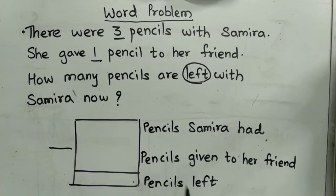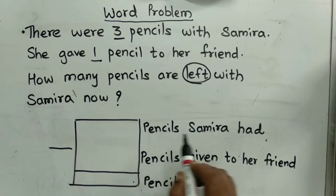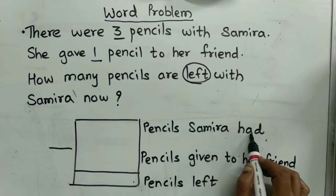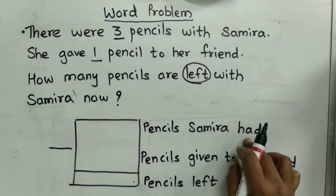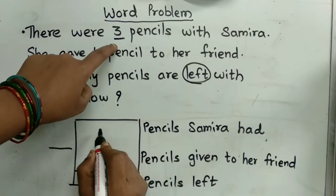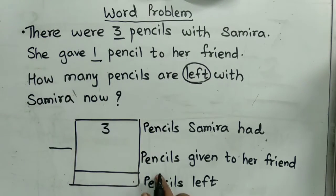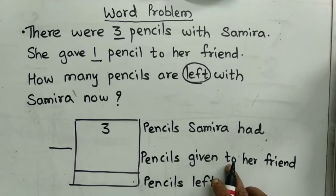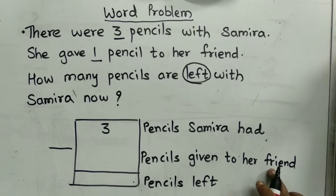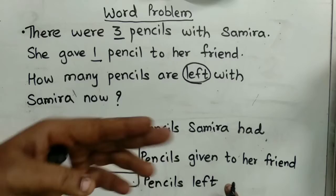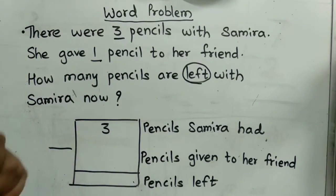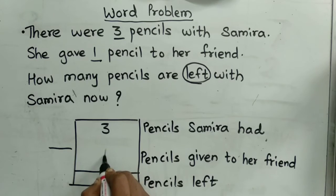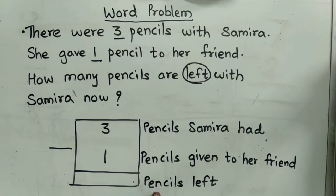Now, come to the number work. Pencils Samira had — how many pencils did Samira have? Three. She had three pencils. Pencils given to her friend — how many pencils did she give? One pencil. So here we write one. Pencils left — because the word 'left' is there, so we have done minus.